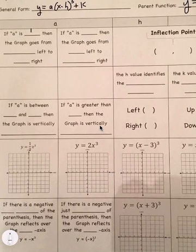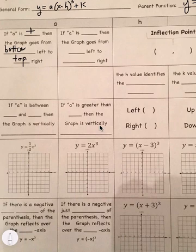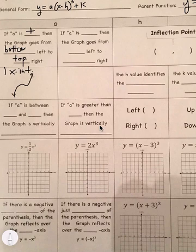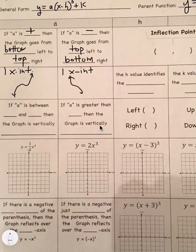If a is positive, then the graph goes up — it goes from the bottom left to the top right. It has exactly one x-intercept and the graph looks something like this. If a is negative, then the graph goes from top left to bottom right — the opposite direction. It still has one x-intercept.